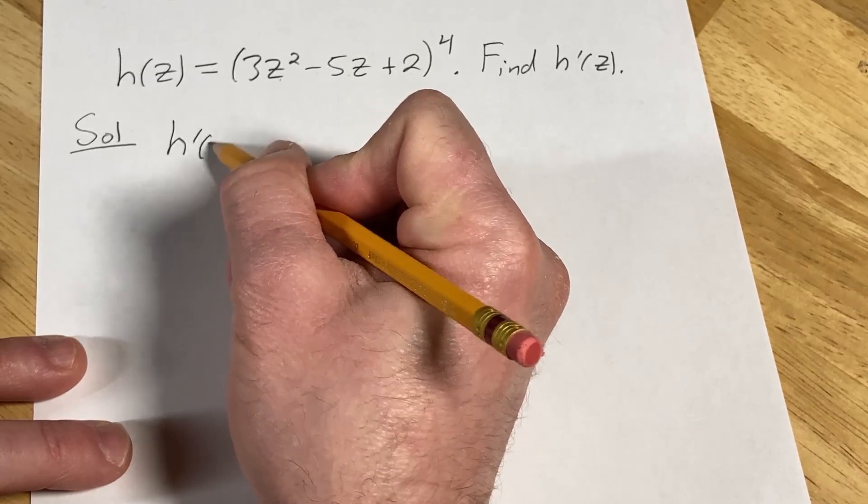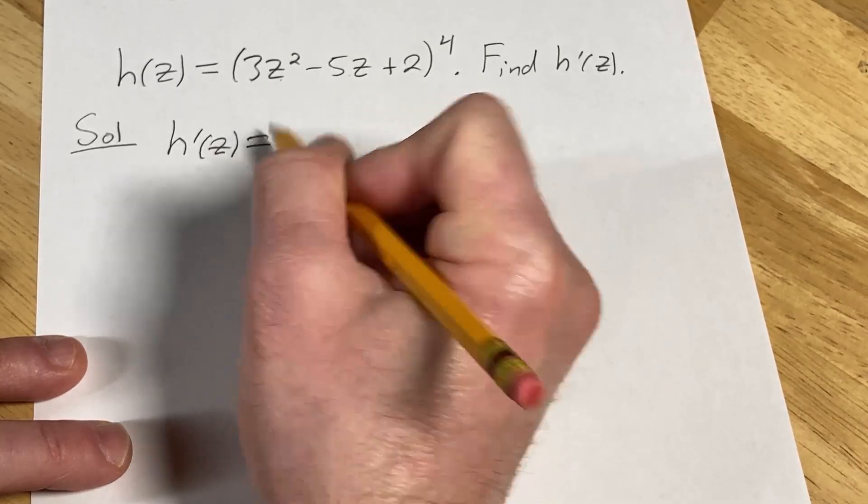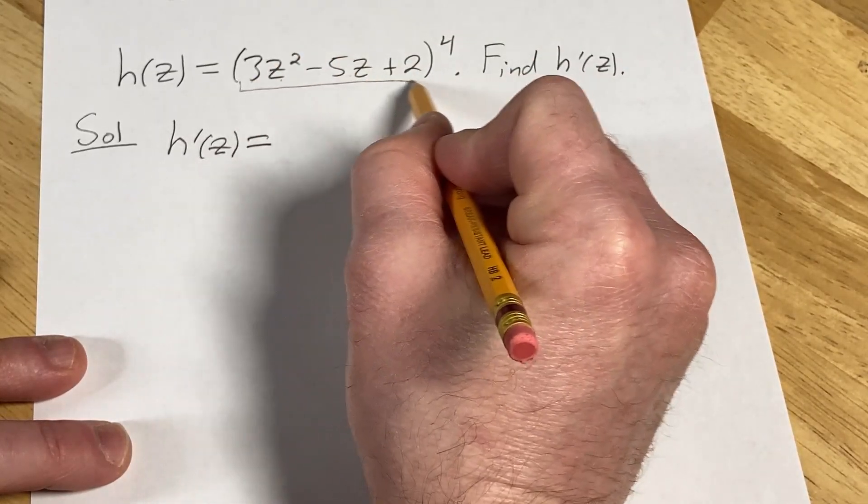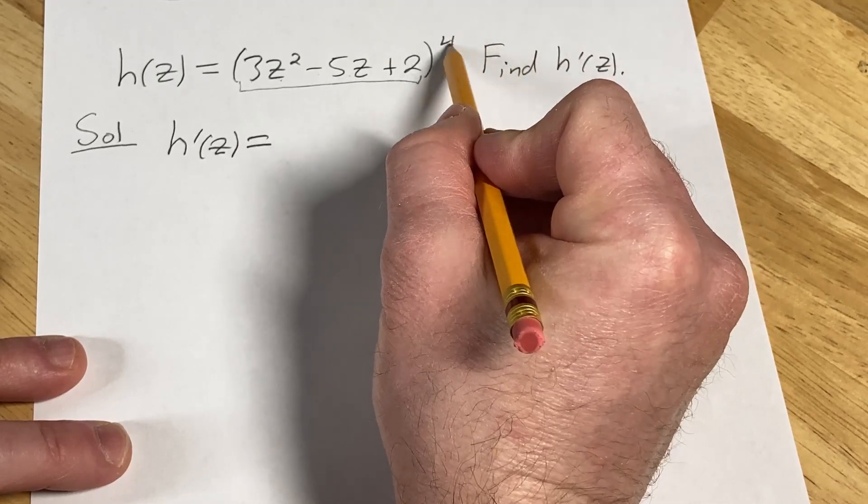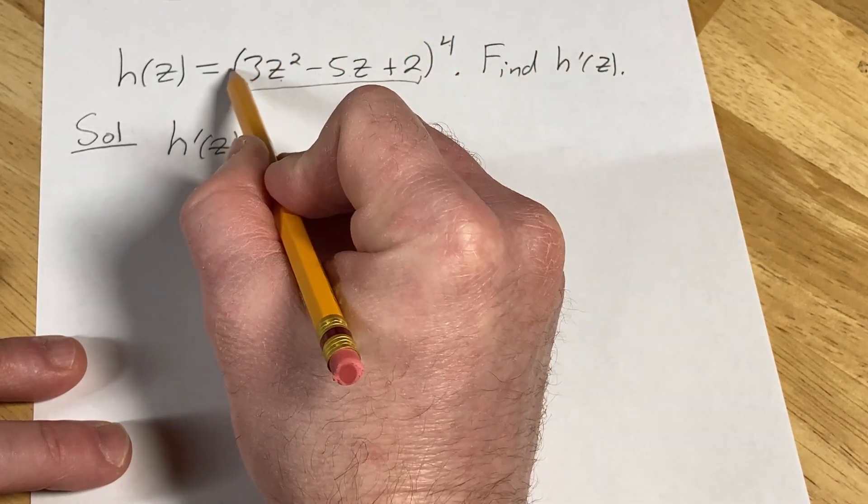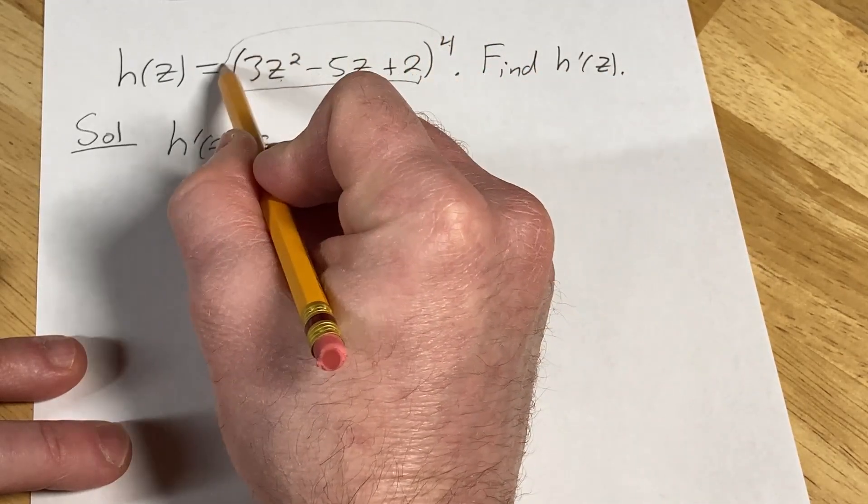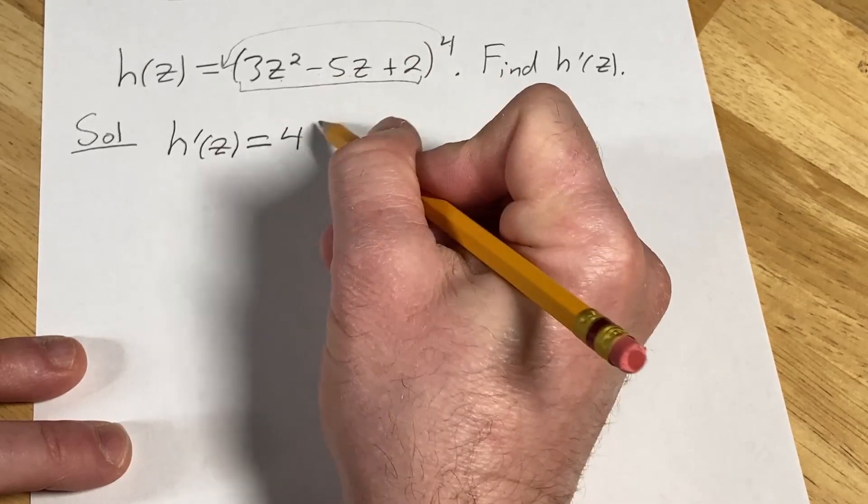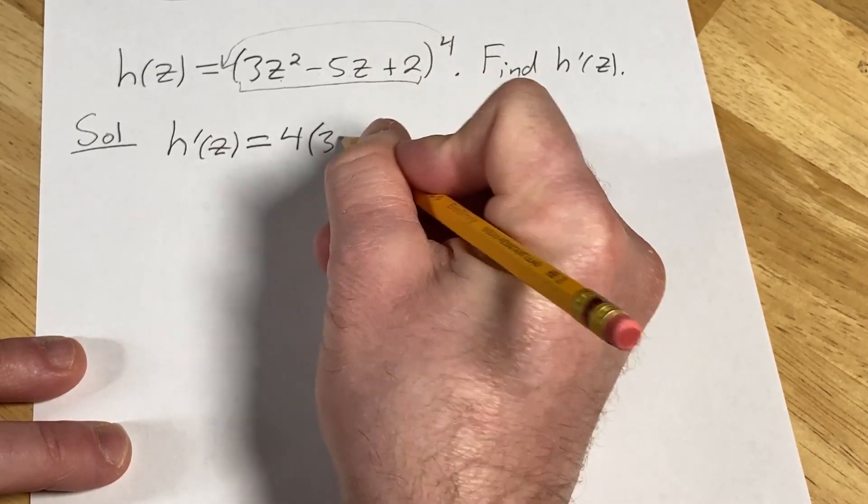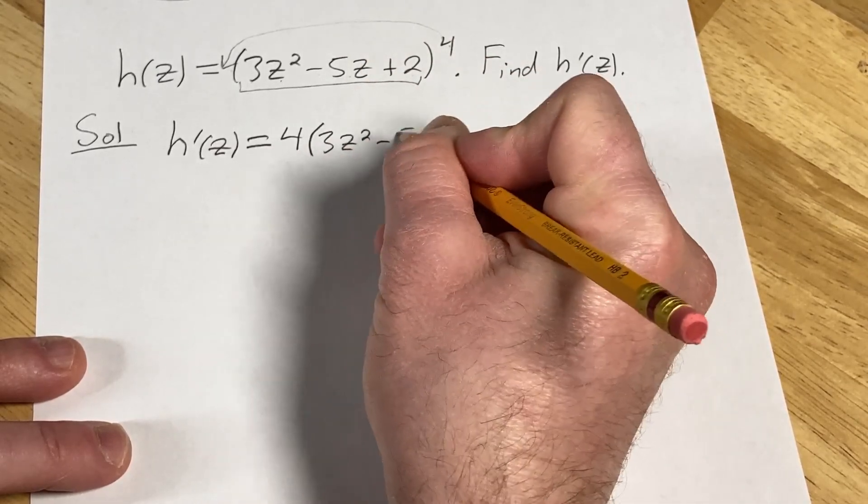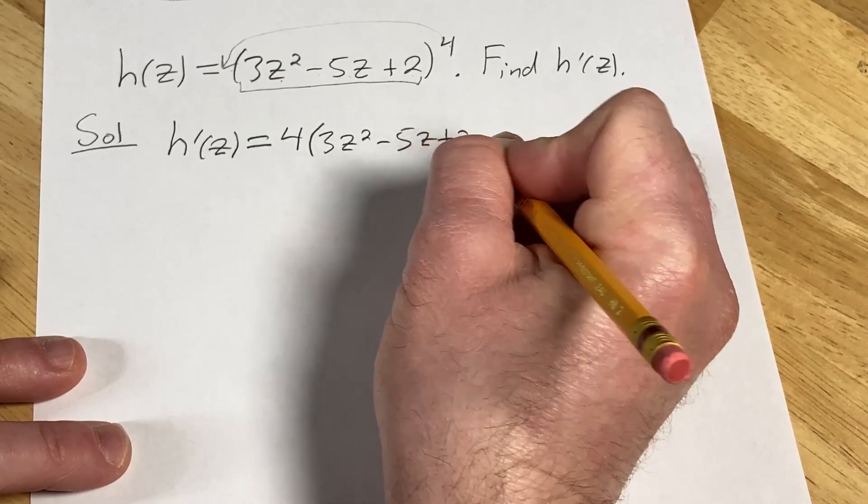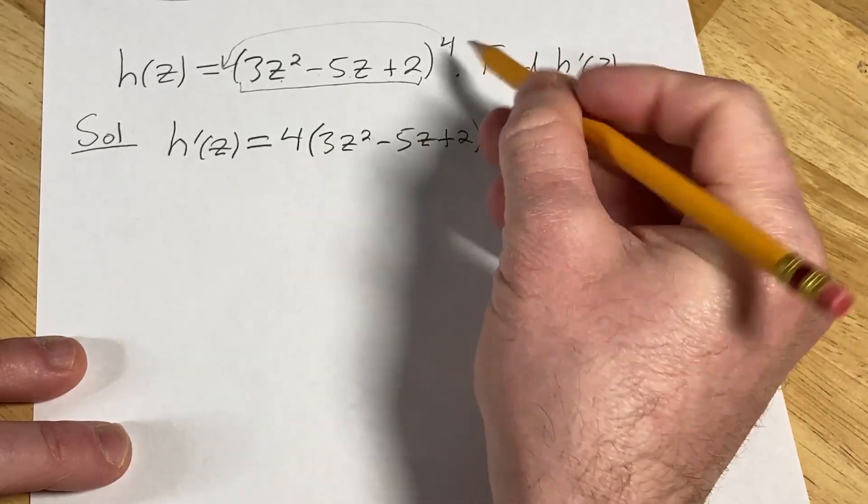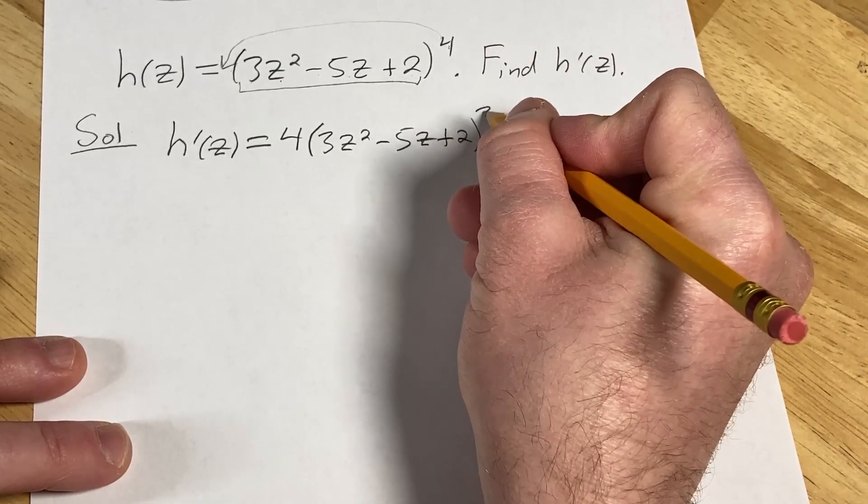So in this case, h prime of z is equal to—so this is our inside function. We're taking the derivative of the outside and we're evaluating it at the inside. So basically, you just bring down the 4 using the power rule, parentheses 3z squared minus 5z plus 2, leave the inside untouched, subtract 1 from the exponent, that gives you 3.